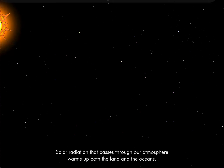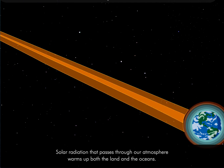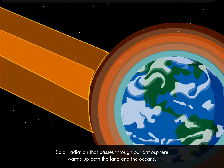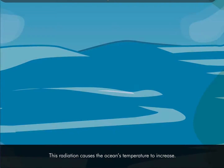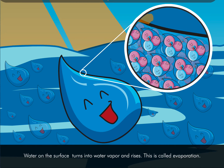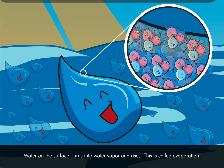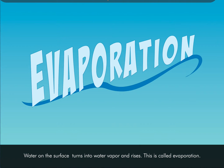Evaporation! Solar radiation that passes through our atmosphere warms up both the lands and the oceans. That radiation causes the ocean's temperature to increase. Some water on the surface of the oceans and big lakes turns into water vapor and rises. This is called evaporation.